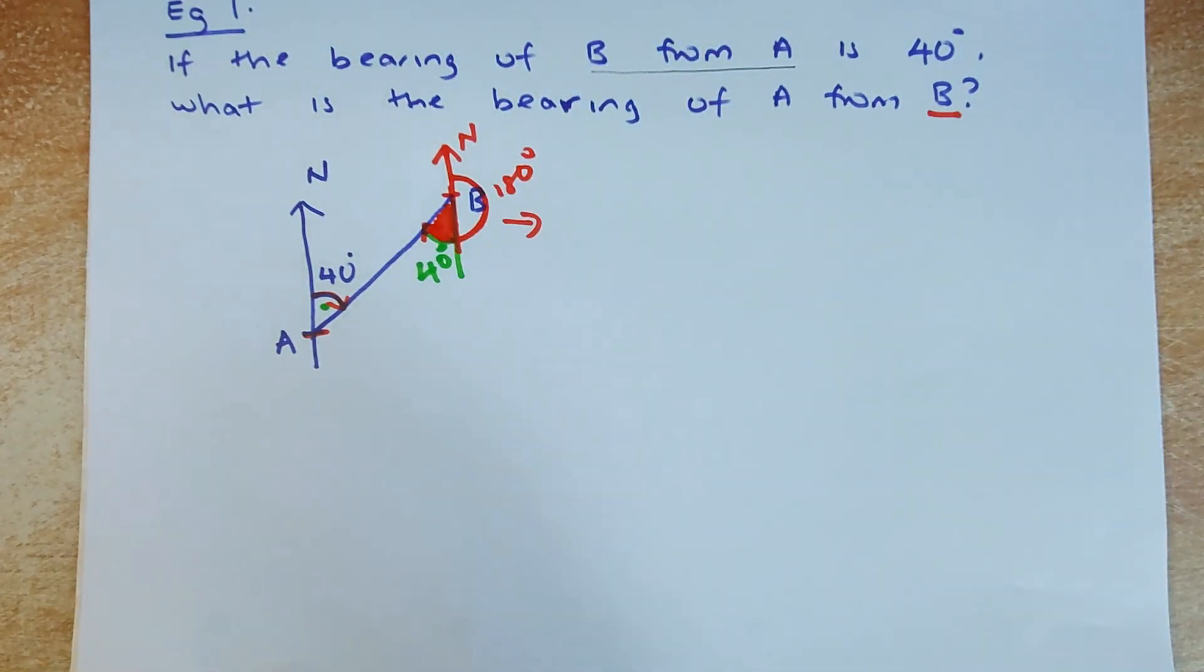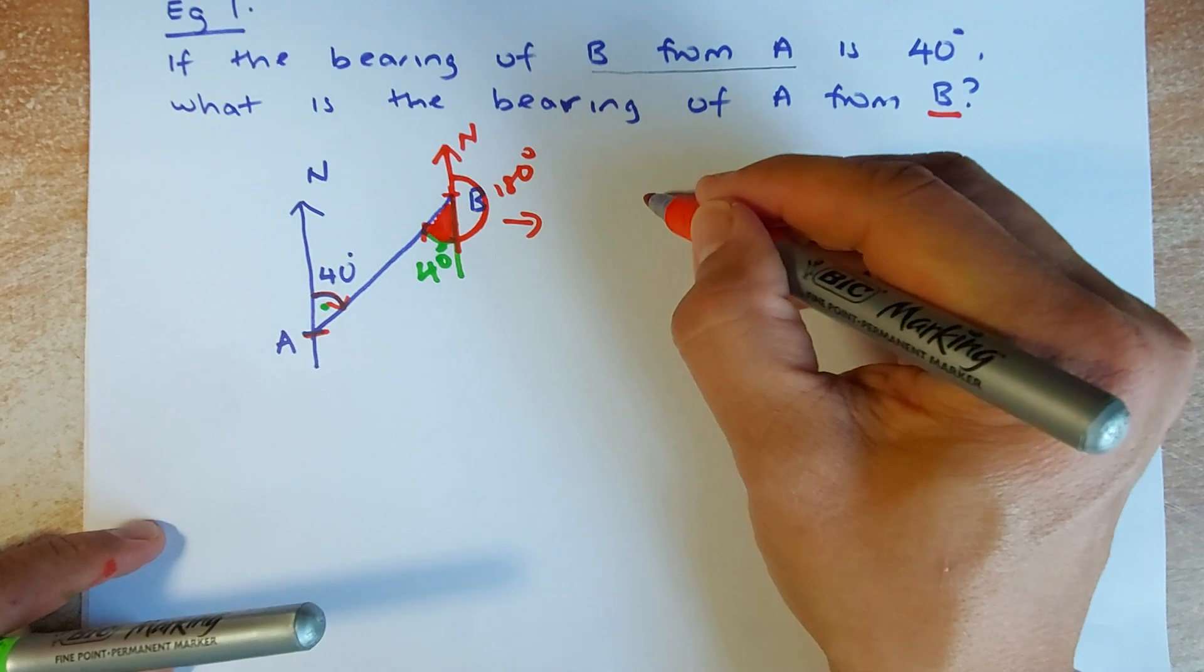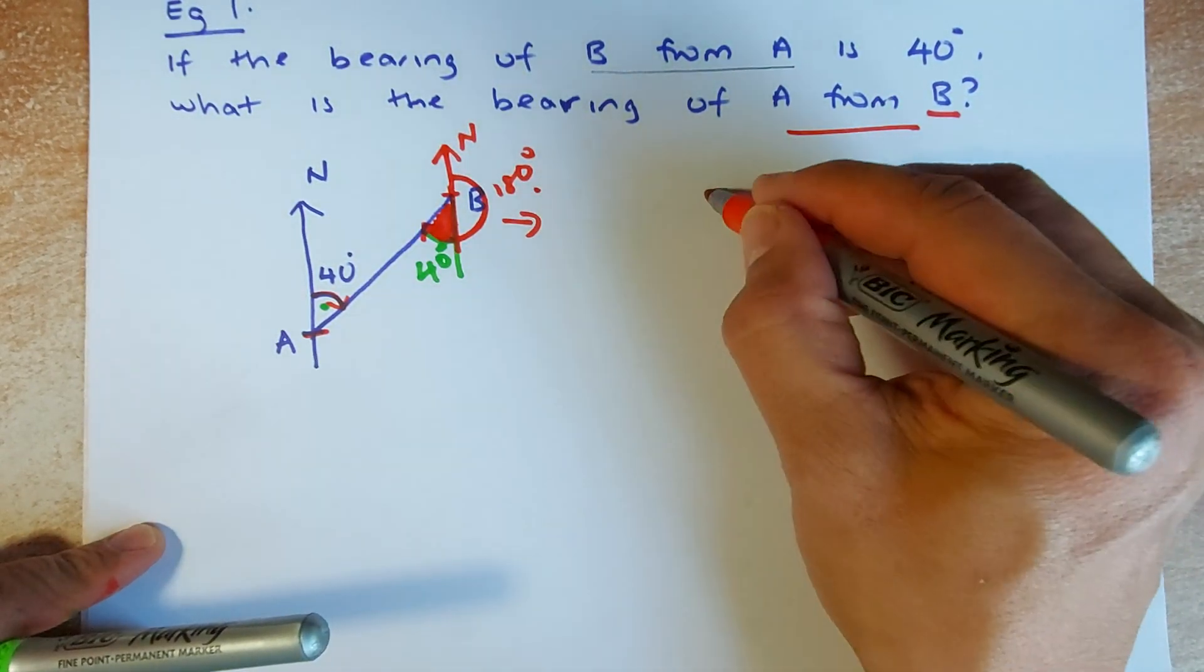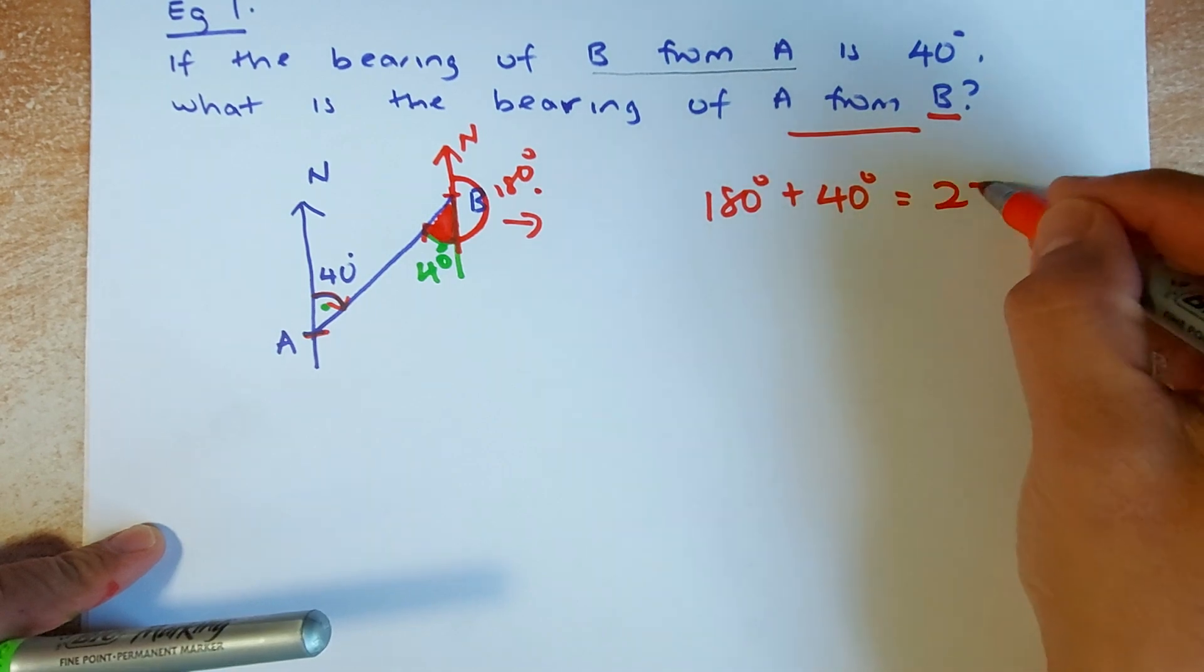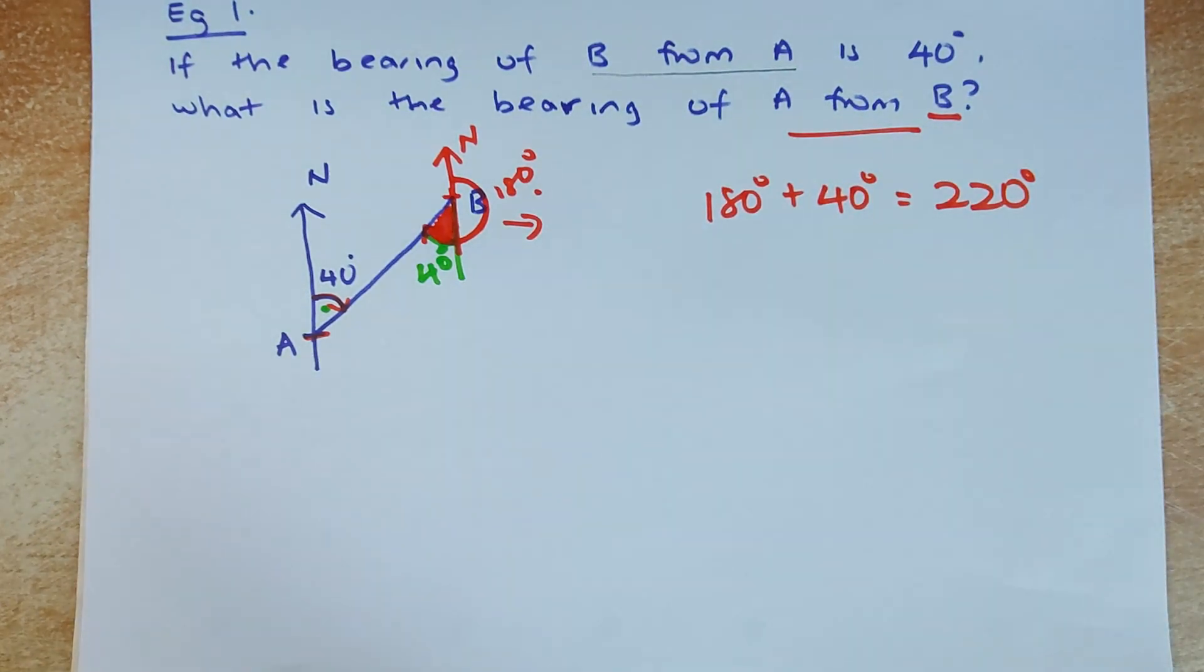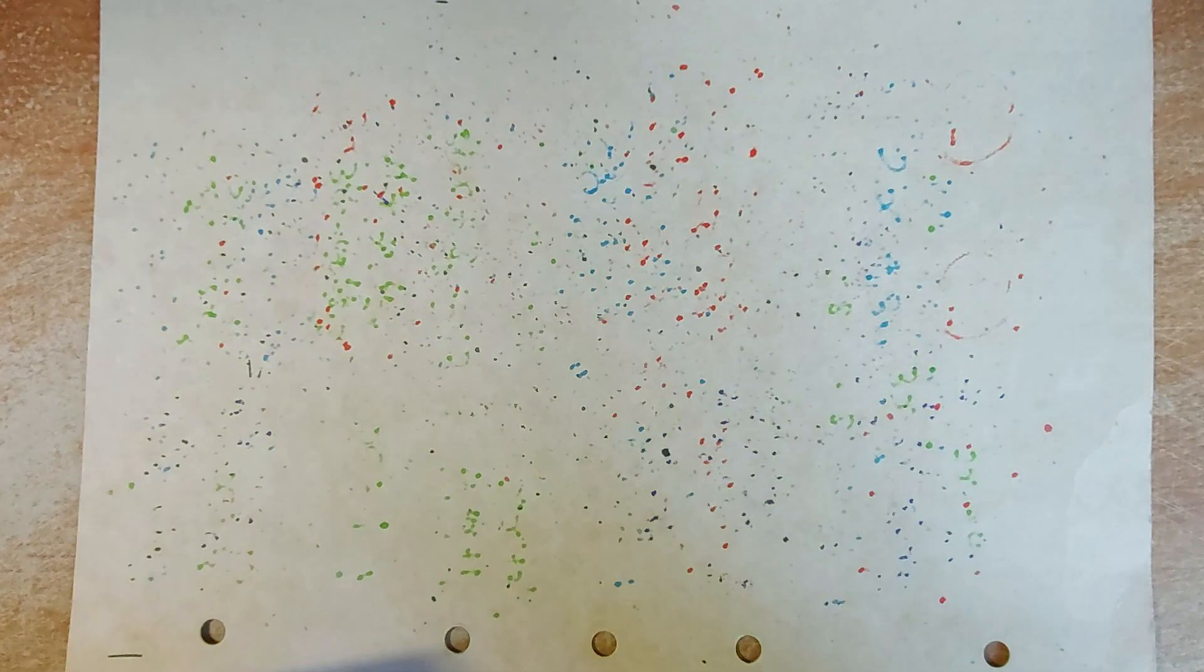To calculate the bearing of A from B is going to be 180 plus 40 degrees, and the bearing is 220 degrees. Hope you get it. Now we're going to do another example.